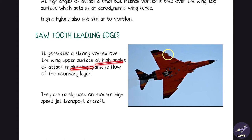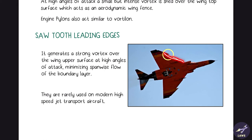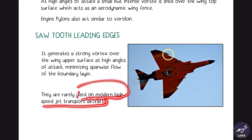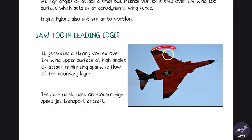Sawtooth leading edges generate a strong vortex over the wing upper surface at high angles of attack, minimizing spanwise flow to maintain aileron effectiveness. They are generally not used on modern high-speed jet transport aircraft — some older military aircraft used them.